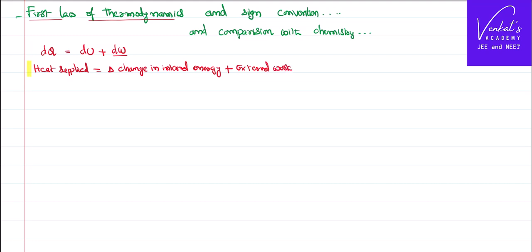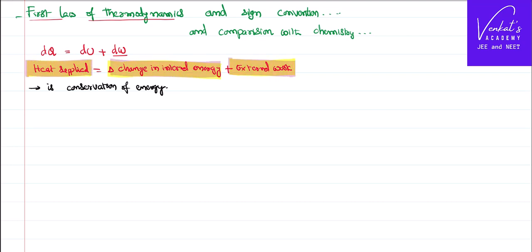It is very clear that heat supplied is an energy, change in internal energy is an energy, and external work is also energy. So the first law of thermodynamics is nothing but the conservation of energy concept. The zeroth law of thermodynamics is about thermal equilibrium, whereas the first law is about conservation of energy — that energy is neither created nor destroyed, it just converts from one form to another. That is called the first law of thermodynamics.